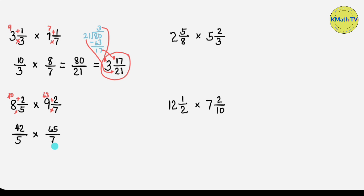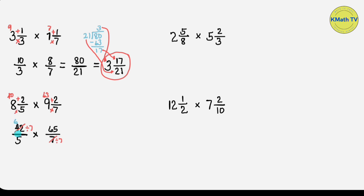Or we can use cancellation before multiplying. In the cancellation process, we can do cross-cancellation — cancel the numerator and the denominator of each fraction if they share a greatest common factor (GCF). In this problem, 42 can be divided by 7. The GCF of 42 and 7 is 7, so we divide them by 7: 42 divided by 7 equals 6, and 7 divided by 7 equals 1.